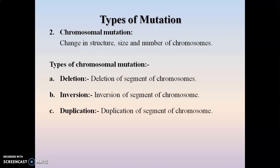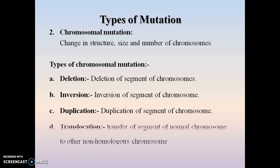The third type is duplication, where a particular segment of a chromosome gets duplicated, causing an increase in the size of the chromosome. The fourth type is translocation, which means a change in the location of a particular segment of a chromosome. In this case, a segment from a normal chromosome gets translocated to another non-homologous chromosome, and that is known as translocation mutation.